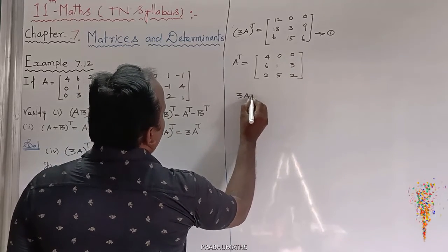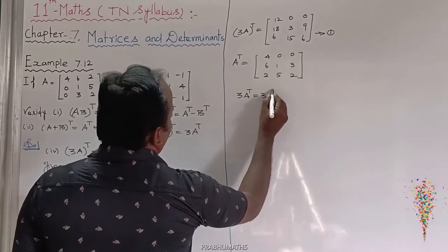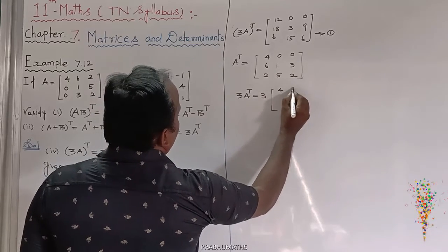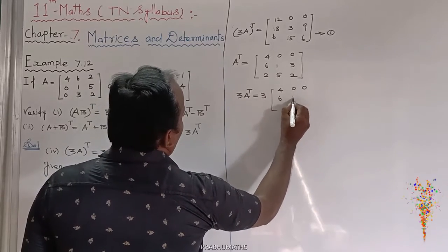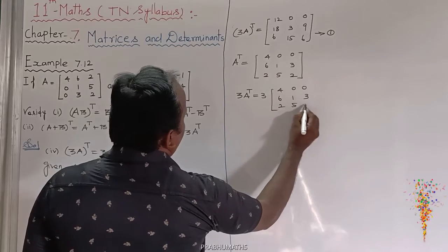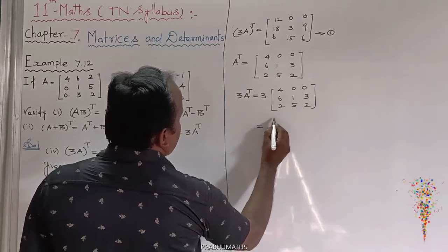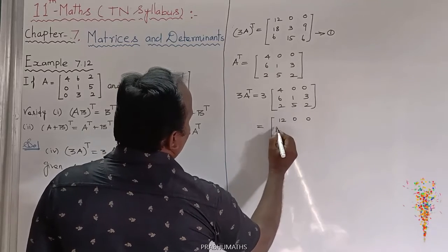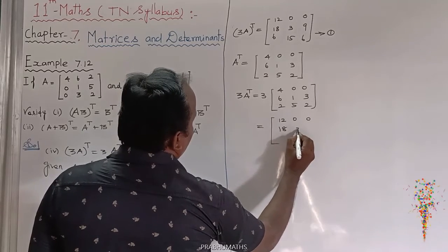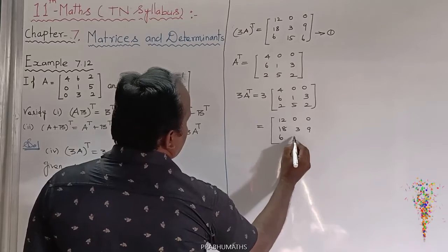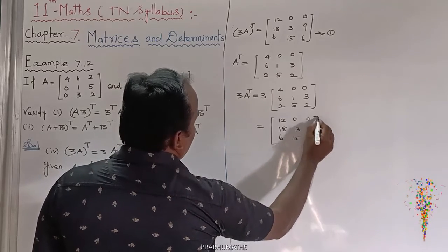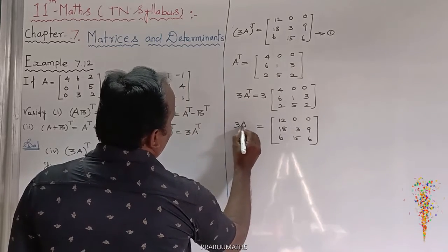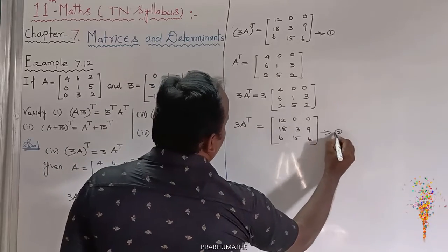Next, 3 times of A transpose is equal to 3 into: 4, 0, 0, 6, 1, 3, 2, 5, 2. So 3 inside one equation is: 12, 0, 0, 18, 3, 9, 6, 15, 6. That is called 3A transpose. This is equation number 2.